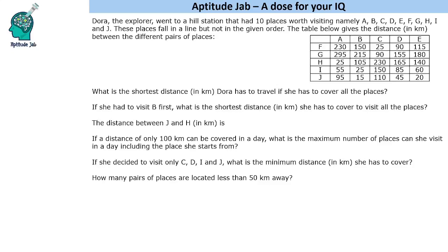Hello everyone, welcome to Aptitude Jab. This is a logical DI problem. It says that Dora the Explorer went to a health station that had 10 places — A, B, C, D, and so on till J — and these places fall in a line but not in the given order. We are given a table which gives the distance between different pairs of places. So this is a mapping-based question wherein you have to map the values.